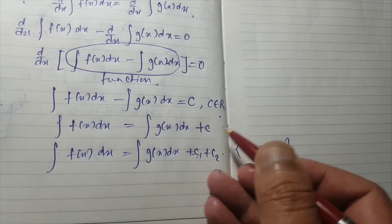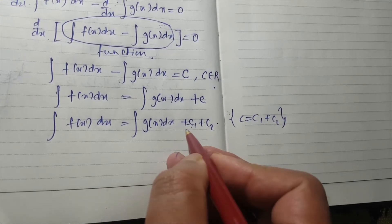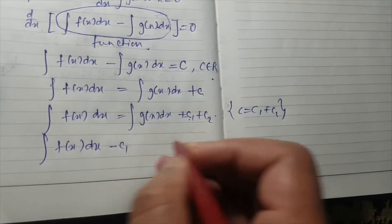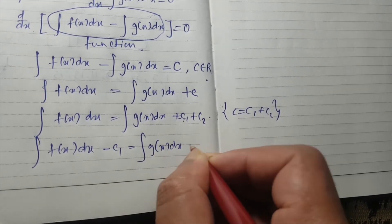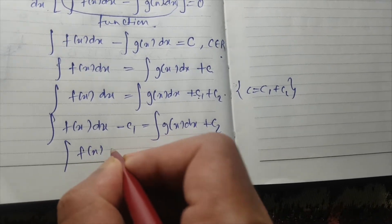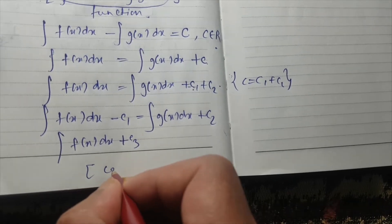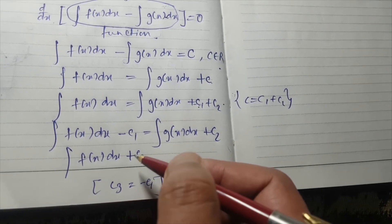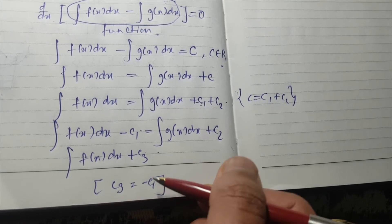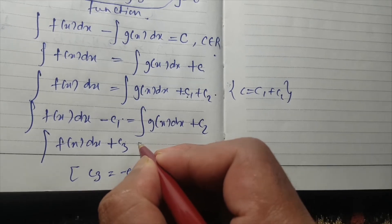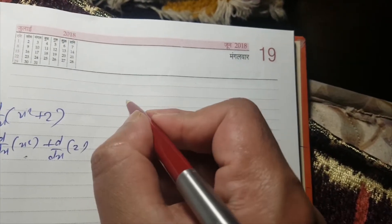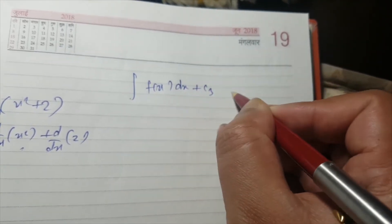Now we put c1 on the left-hand side: integral of f(x) dx minus c1 equals integral of g(x) dx plus c2. We rewrite the left side as integral of f(x) dx plus c3, where c3 equals minus c1. We are just writing a positive constant in place of the negative constant — this does no harm. So we have: integral of f(x) dx plus c3 equals integral of g(x) dx plus c2.